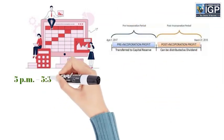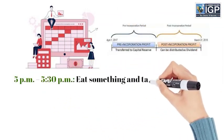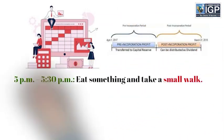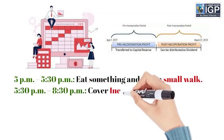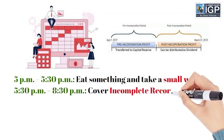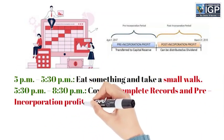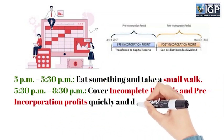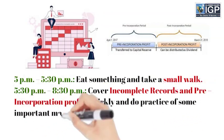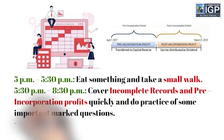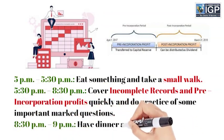From 5 p.m. to 5:30 p.m., eat something and take a small walk. From 5:30 p.m. to 8:30 p.m., cover incomplete records and pre-incorporation profits quickly and do practice of some important marked questions.